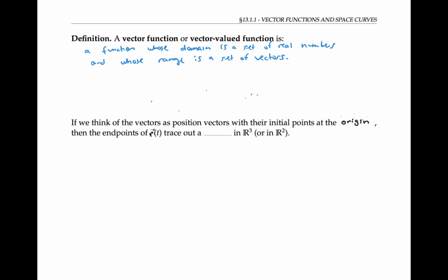If the range consists of vectors in two dimensions, then the vector value function can be written in the form r of T equals r one of T, r two of T, where r one and r two, the components of the vector are themselves real valued functions.